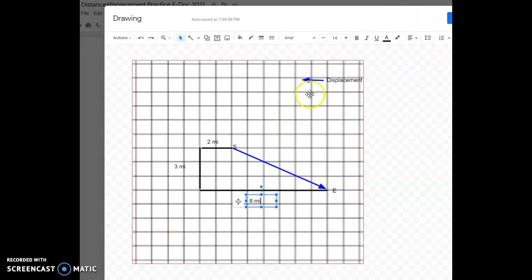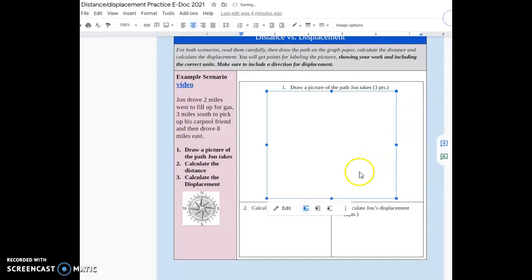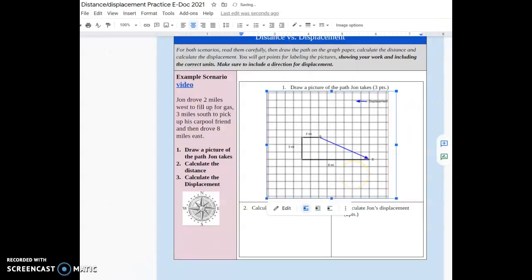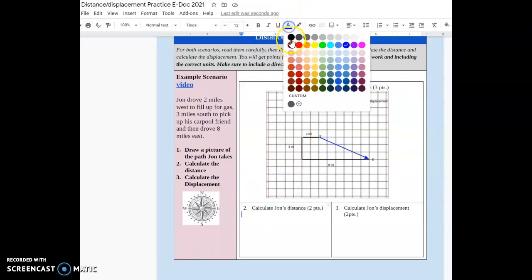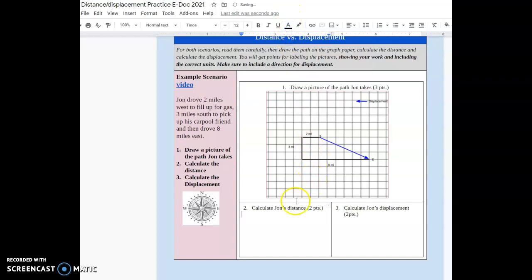So with that, go ahead and click save and close on the upper right, I'm sorry. And you have your picture. So now I'm just going to show you how to do the calculation. So distance is the total path that you travel. So for the distance, I'm going to use black again because it was a black line. John went two miles. And then he went three miles. And then he went eight miles. Two plus eight is ten. Plus three is thirteen miles. There's no direction with distance.